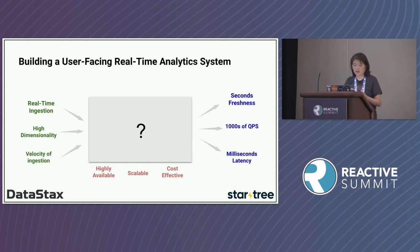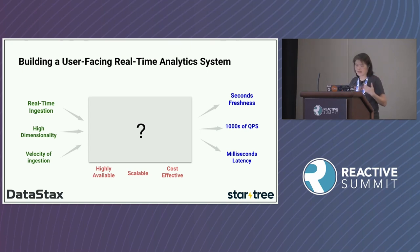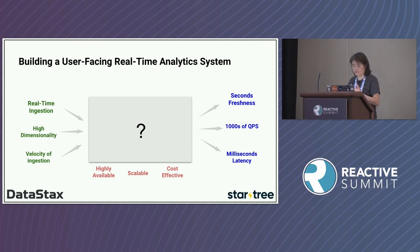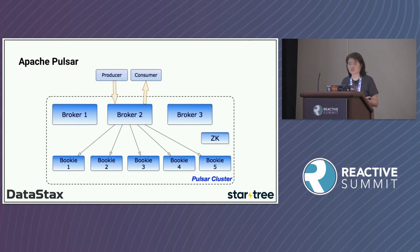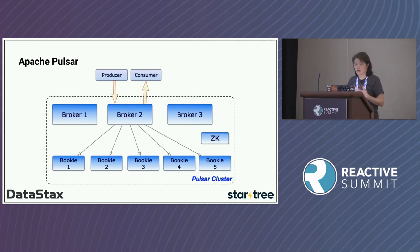To build a user-facing real-time analytics system, the whole pipeline needs to be real-time and real fast. The left side is real-time ingestion with high dimensionality and high velocity. It has to be highly available, very scalable, operating in the cloud, and cost-effective. The right side — user-facing real-time analytics — requires seconds of data freshness, thousands of queries per second, and milliseconds of latency. The question is: who can help with real-time ingestion? We'd like to suggest Apache Pulsar — though folks already using Kafka or other streaming ingestion systems can continue with those.